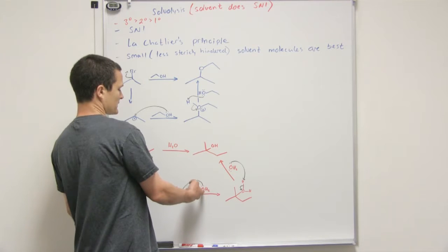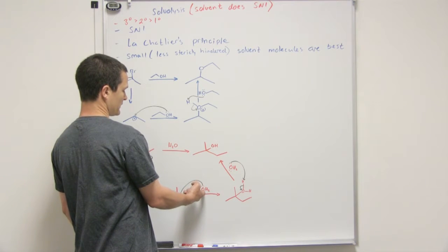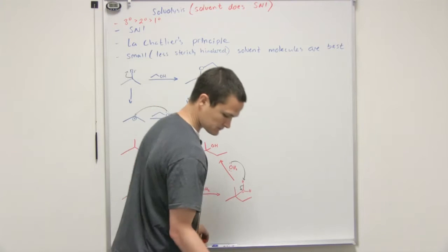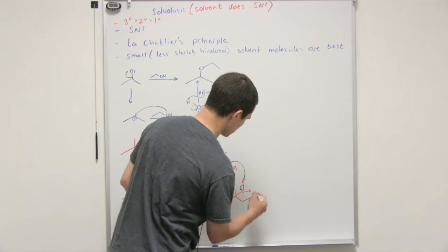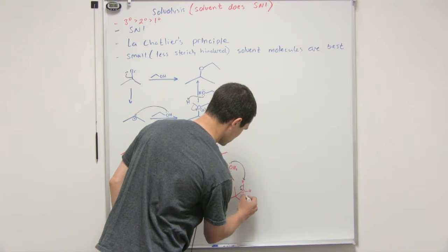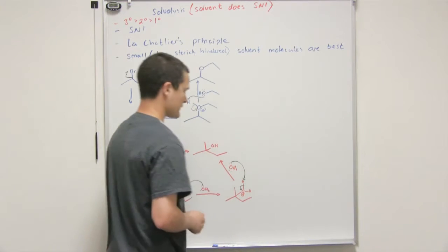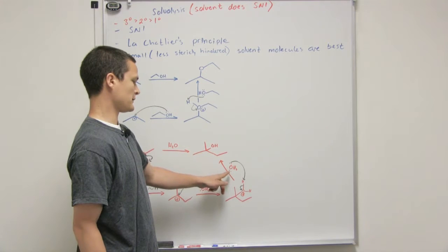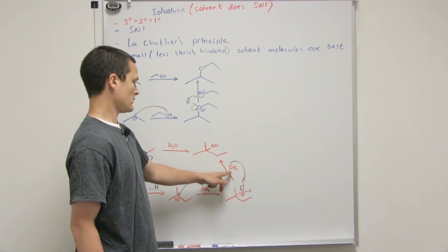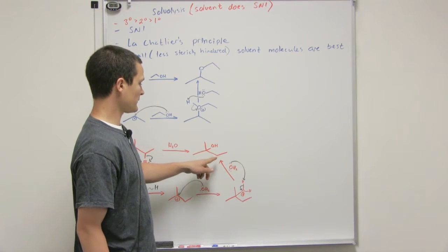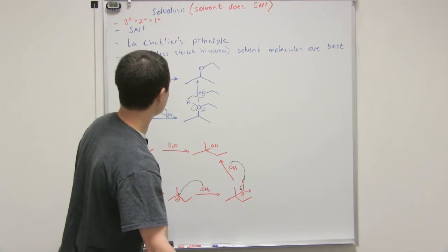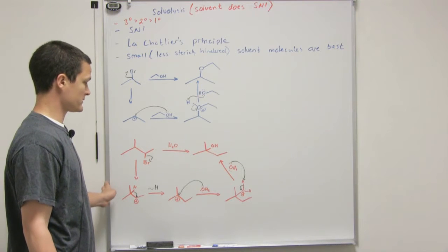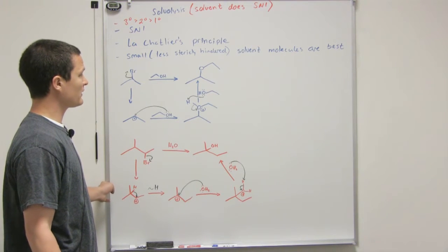We then show nucleophilic attack or substitution by the water itself. Once again we have the oxonium ion here with a charge so we want to show that removed by the solvent which it does and we form hydrogen ion, so our final product is the alcohol substituted in and that in a nutshell is solvolysis.